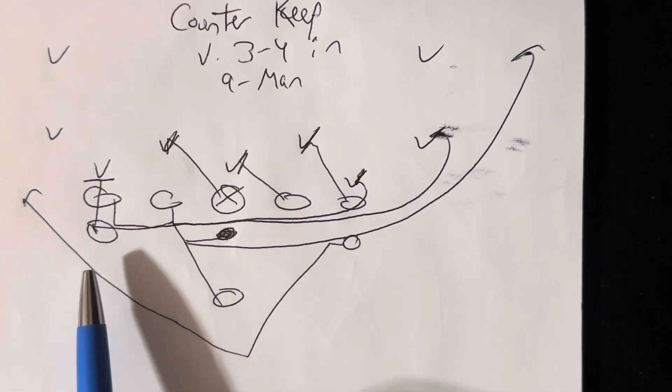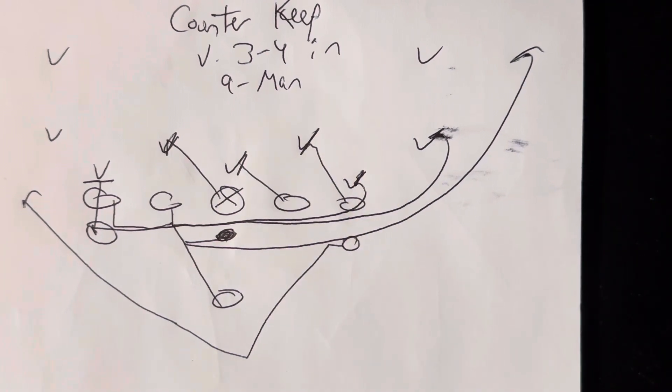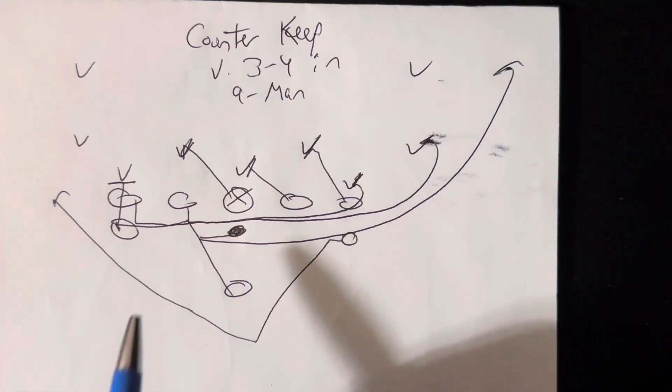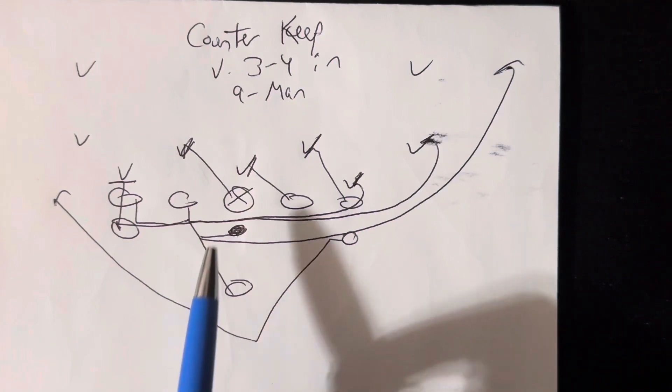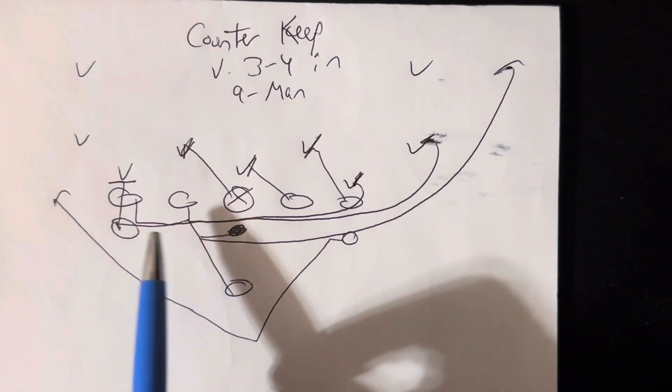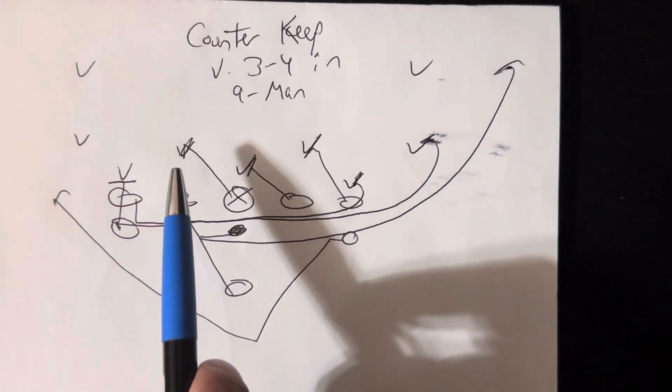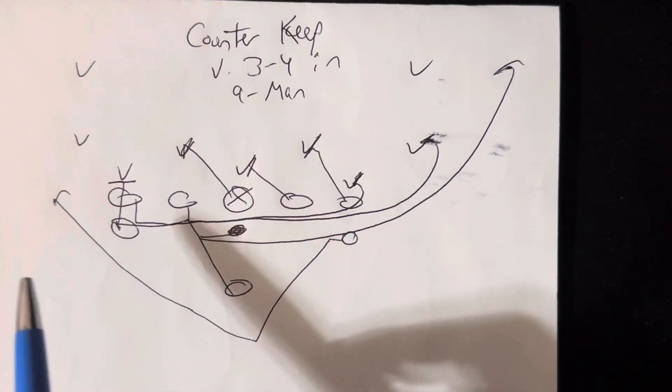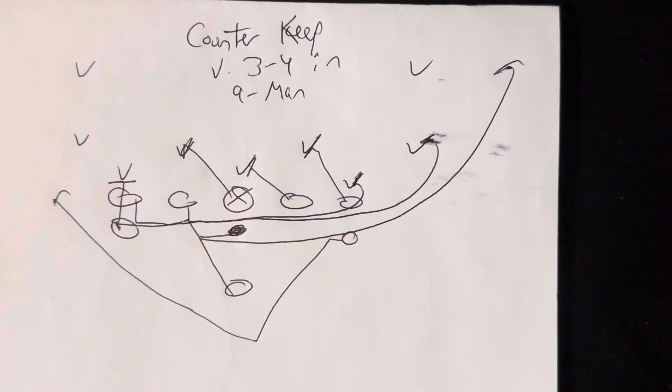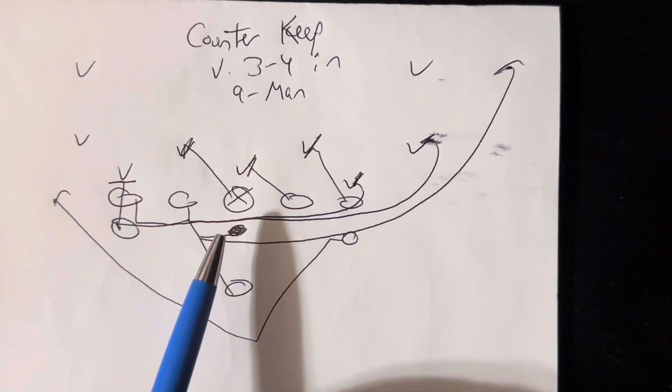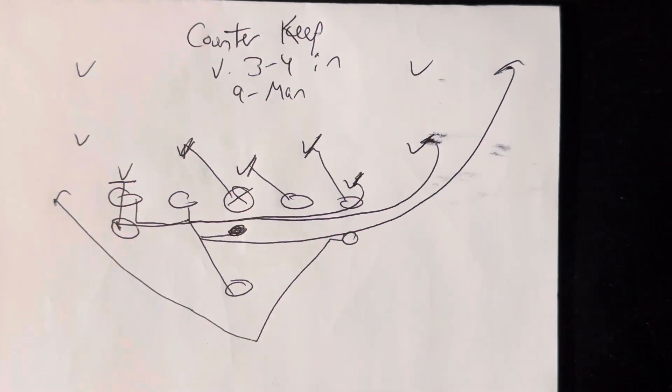The A-back is going to actually fill for the guard right there. So there's a good chance that the B-back really is only going to have to fill in this case in case there's a blitz, but really the blitz would have to be in the B-gap because otherwise the center is going to cancel that. And even a B-gap blitz, there's a good chance the center is going to help cancel that as well. So that's the benefit of being B-back on this concept.